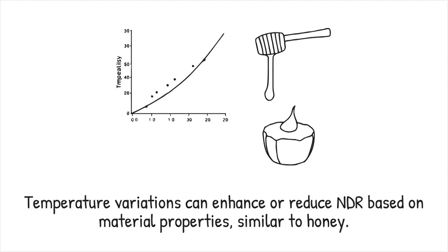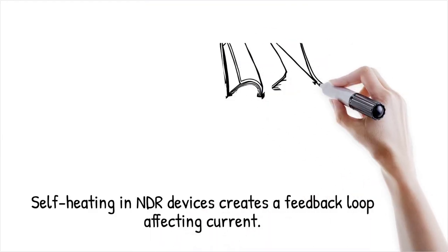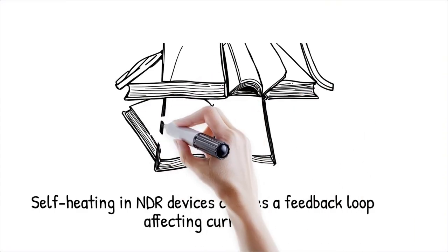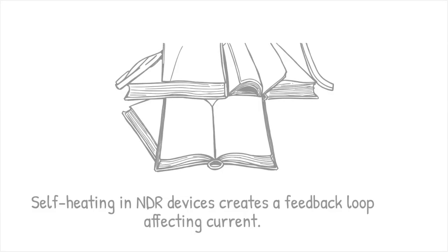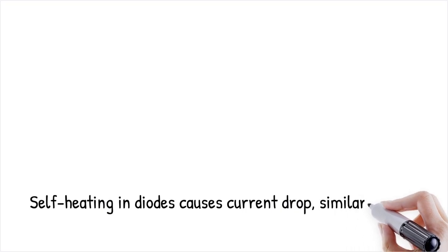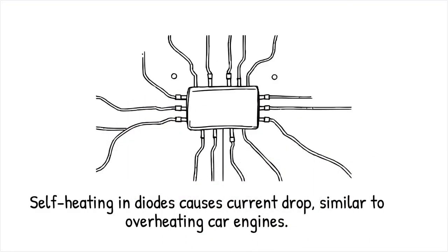Self-heating arises in electronic devices when the power dissipated as heat affects the local temperature, altering the material's conductive properties. In NDR devices, this local temperature rise can shift energy levels or enhance scattering, leading to a reduction in current despite an increase in voltage. The interplay between electrical power and thermal dynamics creates a feedback loop that influences the overall IV behavior. Experimental observations in certain diodes reveal that under high bias conditions, the self-heating effect causes a noticeable drop in current consistent with NDR — similar to a car engine that overheats during prolonged high-speed driving, where rising temperature eventually degrades performance despite the driver pressing harder on the accelerator.